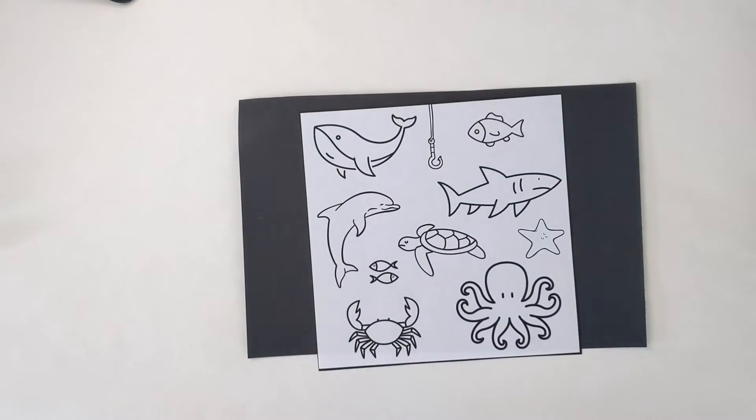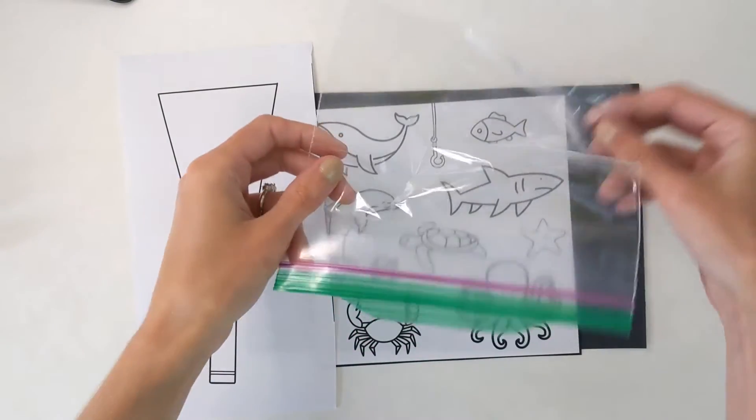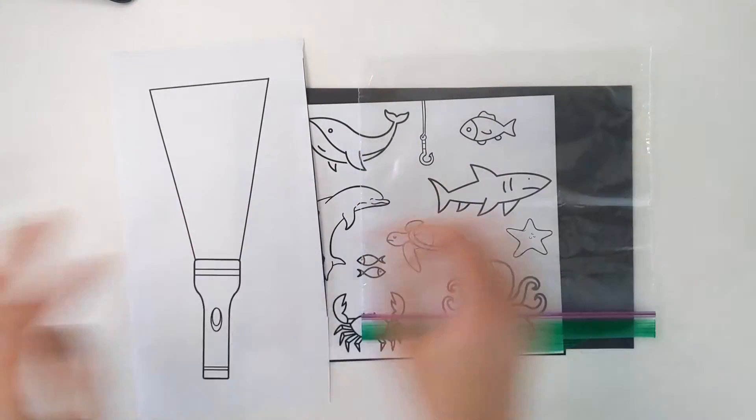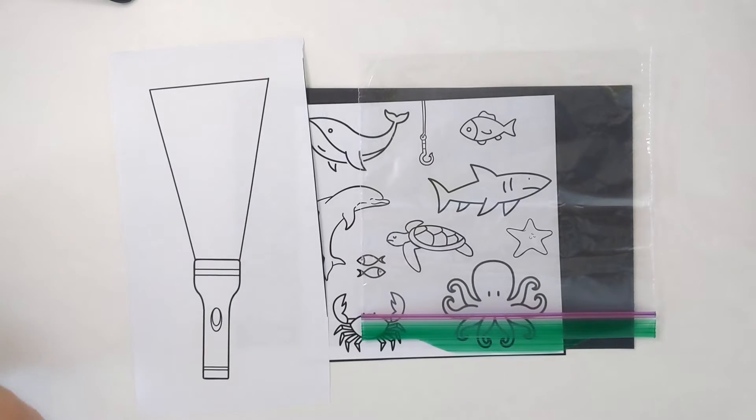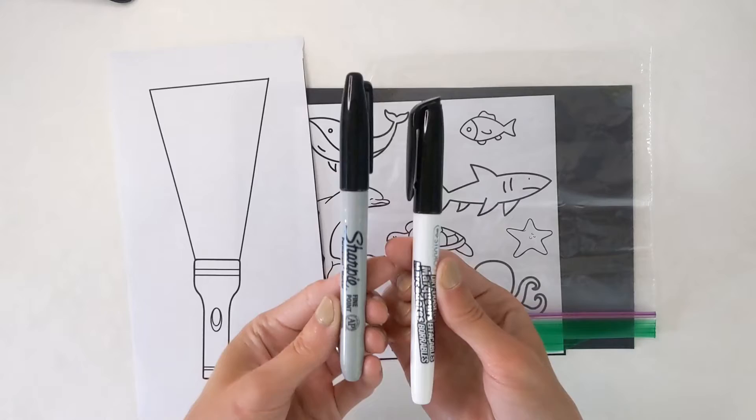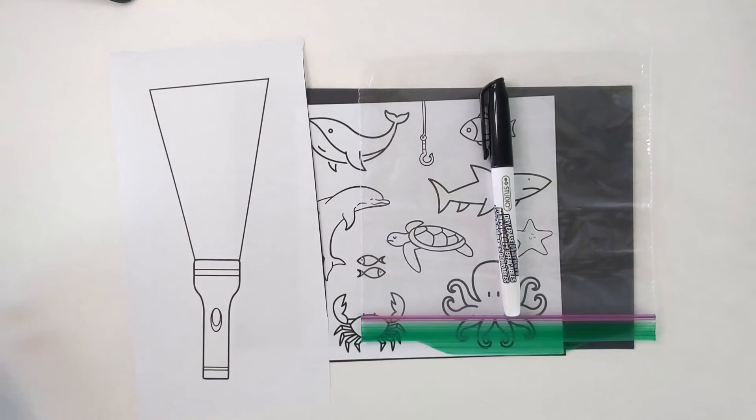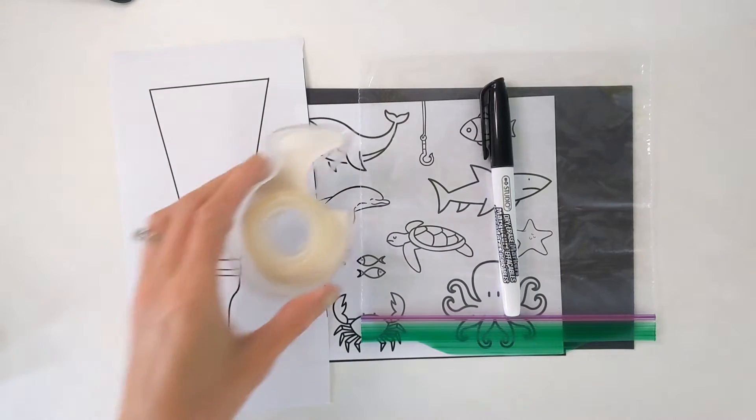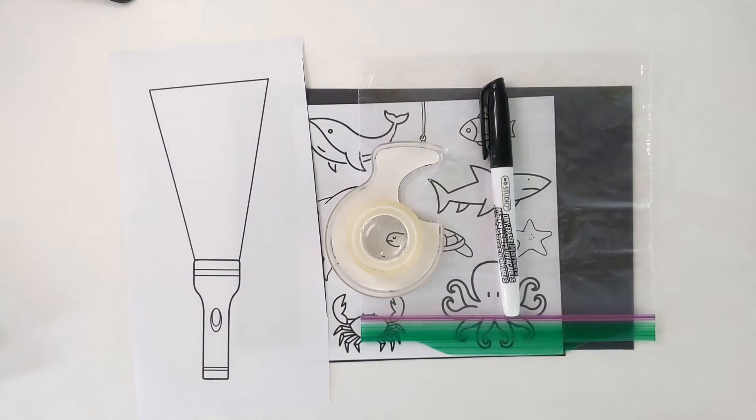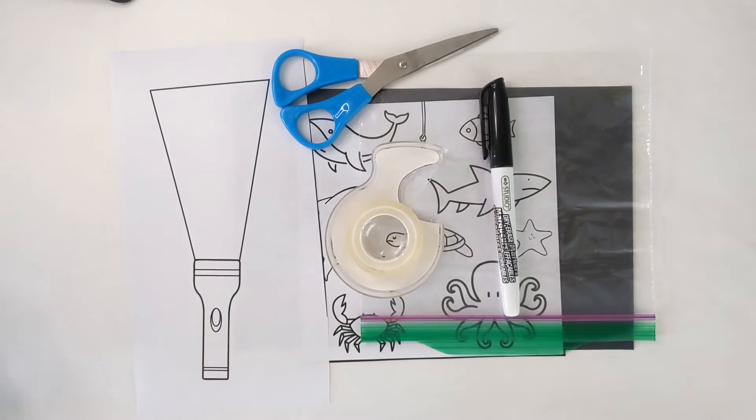For this craft you will need a black piece of paper, some animals to trace, a paper flashlight, a plastic sandwich bag, a dry erase marker or a permanent marker. Your standard washable marker most likely won't work too well for this one. Some tape, some scissors, and some coloring utensils.